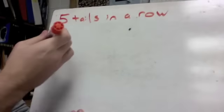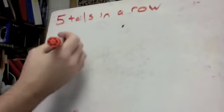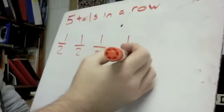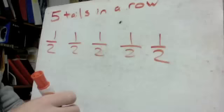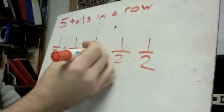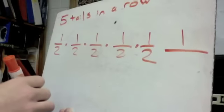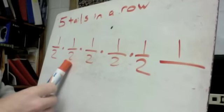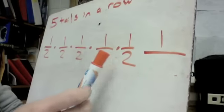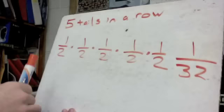All we have to do is find the outcome of all five flips. The first time we flip it, our odds are one tail out of two outcomes. The next time, one tail out of two — and so on for all five flips. Multiplying across, the top is just one, and the bottom is 2×2×2×2×2 = 32. So the odds of getting five tails in a row are one in 32.